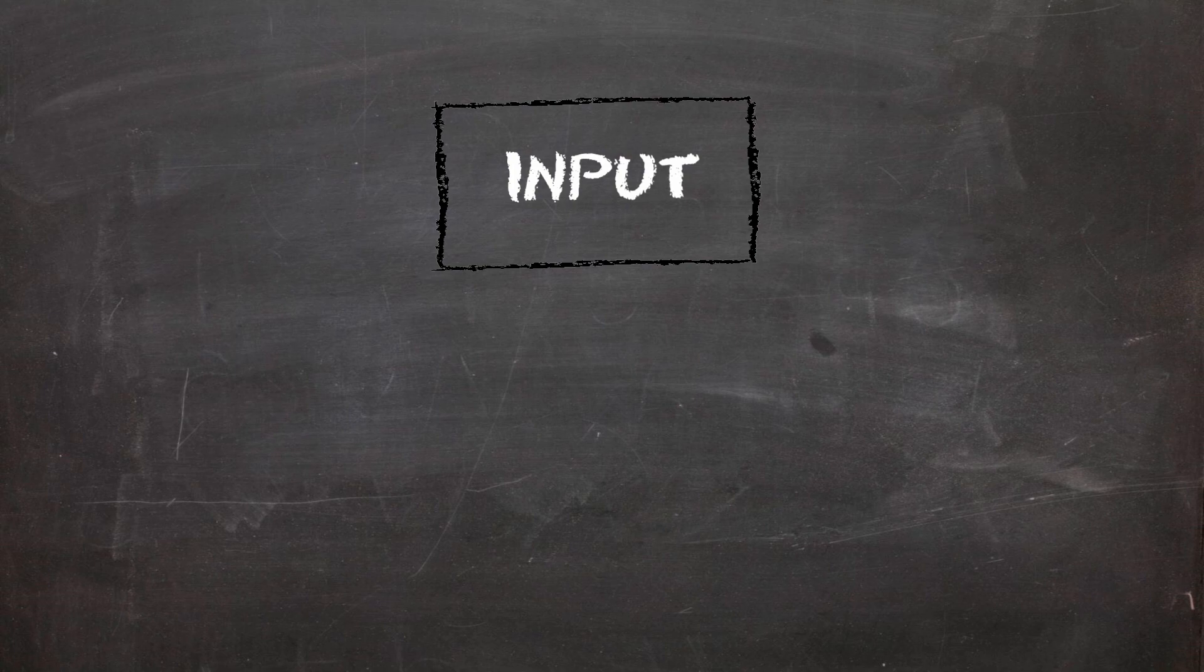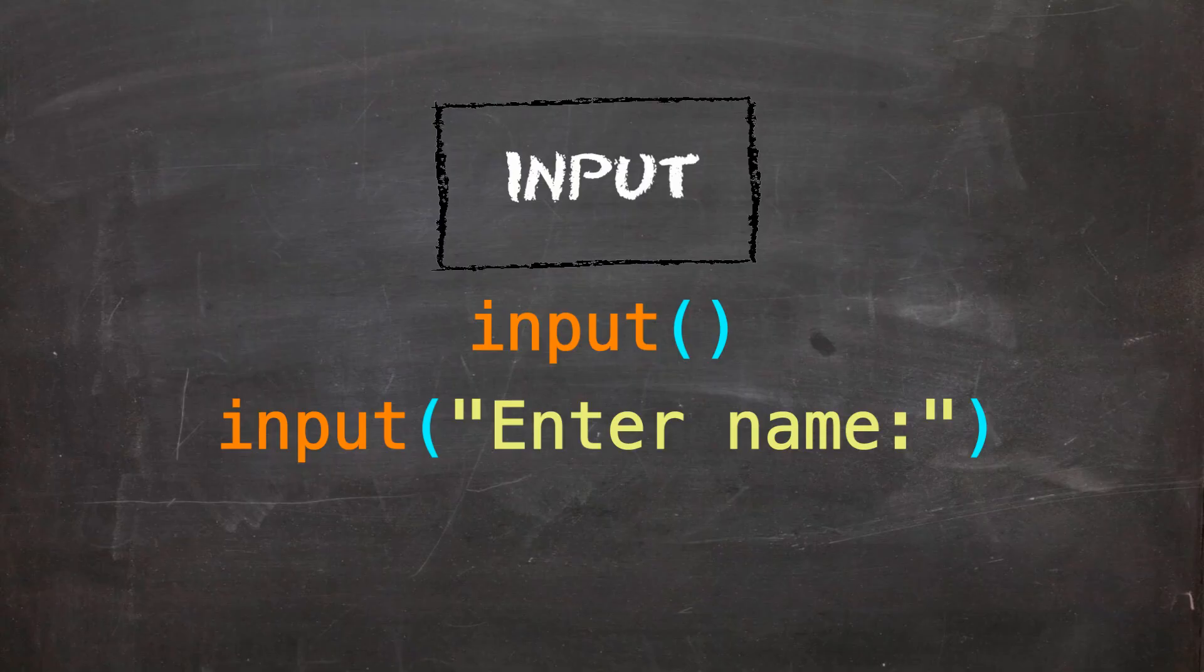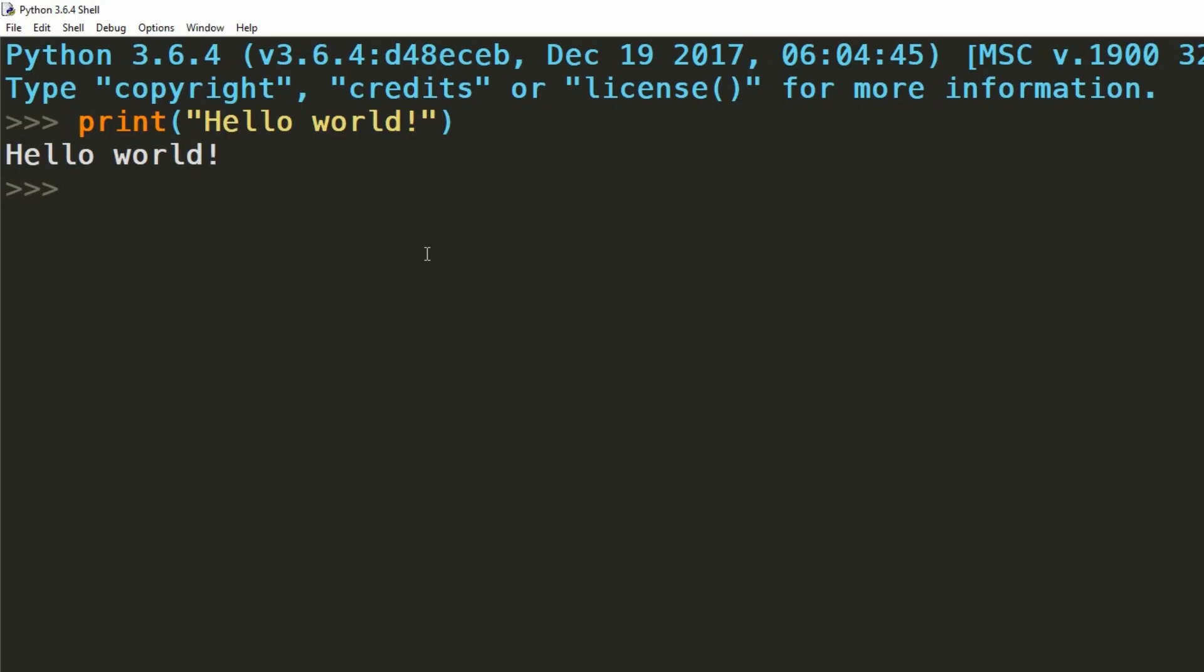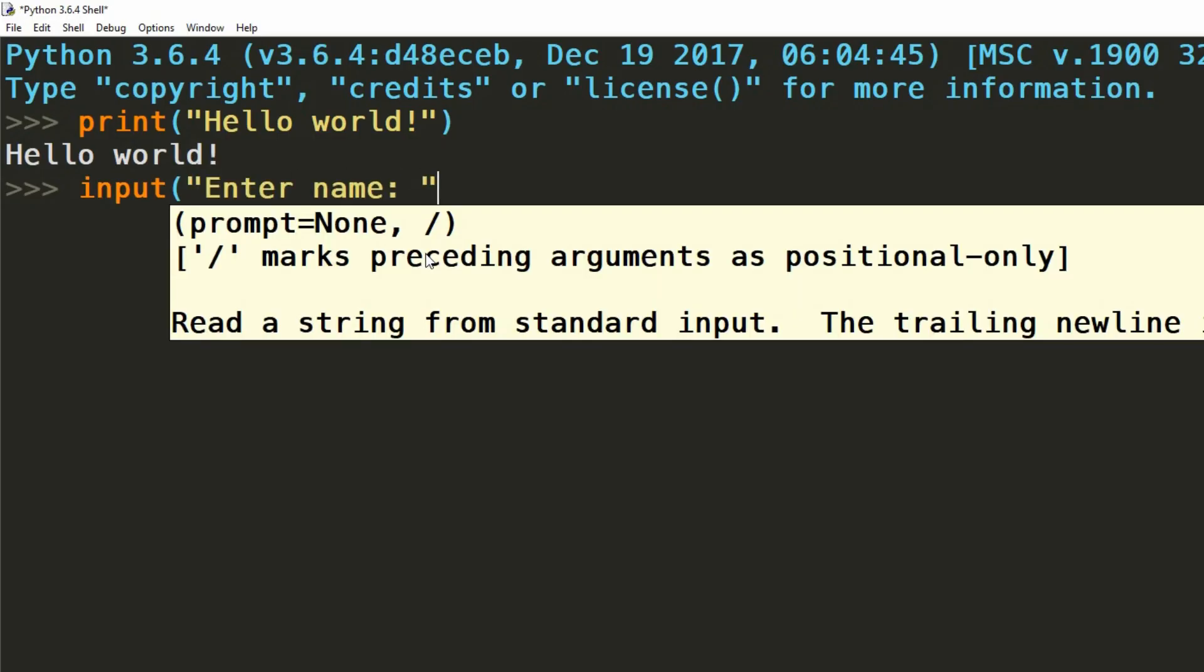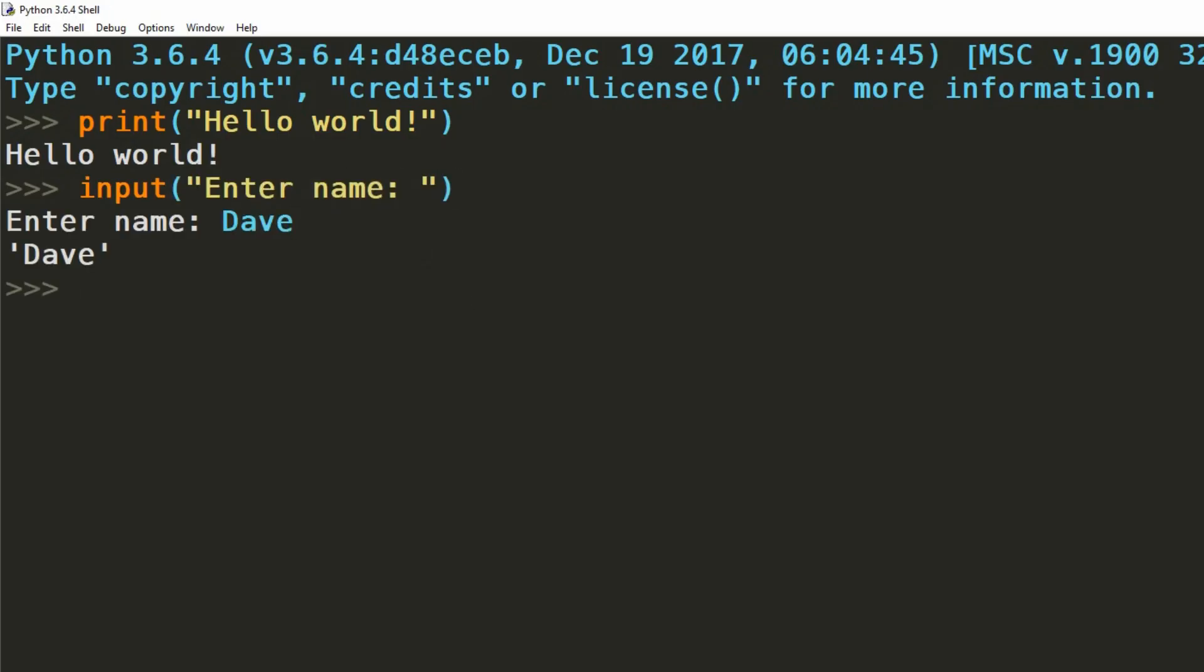Now the input, or in Python, the input. We use this command to gather information from the user of our programs. We do it like so. Straight away there's a problem here with what we've just done, which we'll fix later. Great, we've gathered information from the user, but where did it actually go?